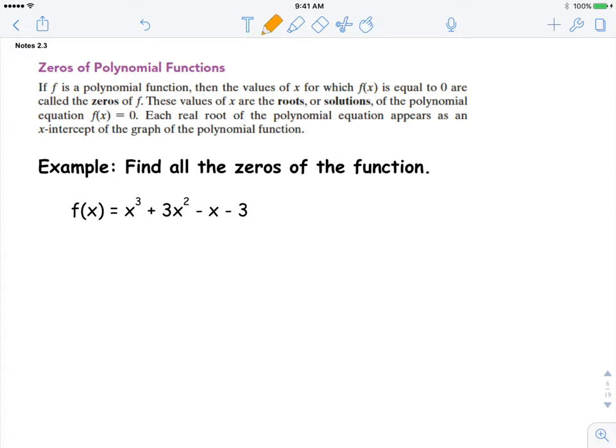Each real root of the function appears as an x-intercept on the polynomial function. So I'm going to mark this up a little bit. When we set the function equal to zero and we solve it for x, these are going to be the x-intercepts of the polynomial function. They're also called the zeros of the function, roots, or solutions.